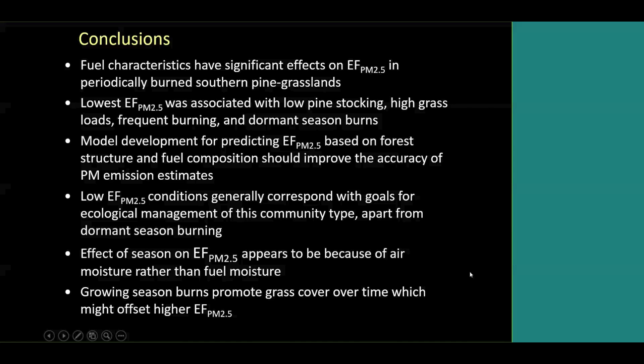Some conclusions from this part of the study: fuel characteristics do seem to have significant effects on PM 2.5 emission factors in these periodically burned southern pine grasslands. The lowest emission factors were associated with low pine stocking, high grass loads, more frequent burning, and dormant season burns. It seems that model development for predicting emission factors based on forest structure — like pine tree stocking — and fuel composition, whether mostly grass or other fuels, should improve the accuracy of PM emission estimates in this ecosystem type.